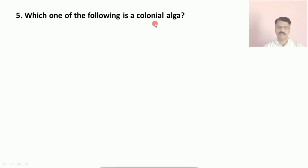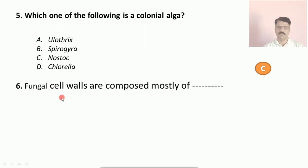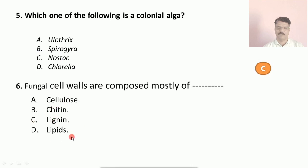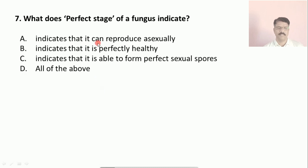Question number five: which one of the following is a colonial alga or colony-producing alga? Options: (a) Ulothrix, (b) Spirogyra, (c) Nostoc, (d) Chlorella. The correct answer is (c), Nostoc. Question number six: fungal cell walls are composed mostly of? Options: (a) cellulose, (b) chitin, (c) lignin, (d) lipids. The correct answer is (b), chitin. Question number seven: what does the perfect stage of fungus indicate? Options: (a) it can reproduce sexually, (b) it is perfectly healthy, (c) it is able to form perfect sexual spores, (d) all of the above. The correct answer is (c).